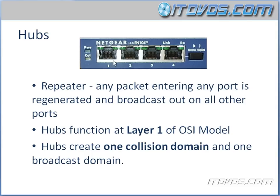Very briefly, a collision domain is basically a connection or connections where information can collide with other information. For example, let's say we've got four computers plugged into each one of these ports. Computer one is trying to send information, and at the same time computer four is trying to send information. That information will actually collide if they try to send it at the same time, and then it will have to be retransmitted. There's a protocol that Ethernet uses called CSMA/CD — we'll talk about that later — but that helps with the collision and retransmit process.